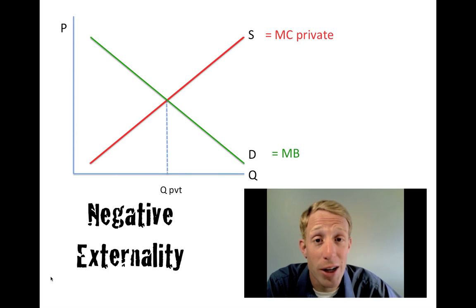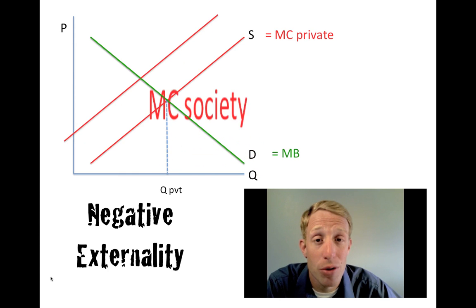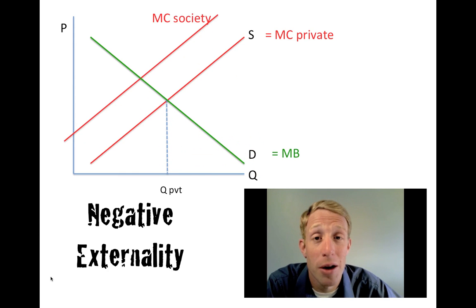From society's perspective, there are other costs that should be taken into consideration. And if the producer did take those into consideration, the supply curve would shift up to the left, and less would be produced. We would find the intersection of that society supply curve and the demand curve, and we would see that the quantity from society's perspective would be lower. And incidentally, it would be lower and sold at a higher price.